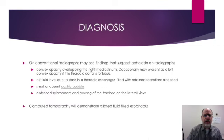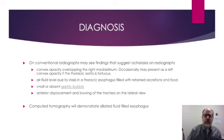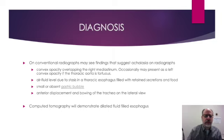On conventional radiographs, there may be findings present that suggest the diagnosis of achalasia: a convex opacity overlying the right mediastinum. Occasionally, you may also see a leftward convexity if the thoracic aorta is tortuous. Air fluid levels due to stasis in the thoracic esophagus can be seen, and the esophagus can also be filled with retained secretions and food that may be visible radiographically. Usually there is a smaller or absent gastric bubble, and on the lateral view you can see a distended posterior wall of the esophagus as well as bowing of the trachea.